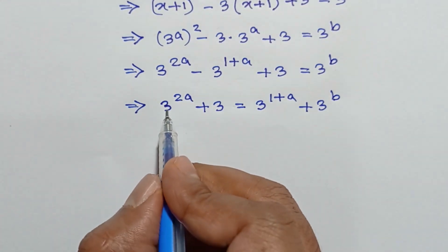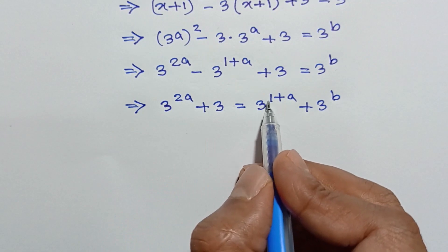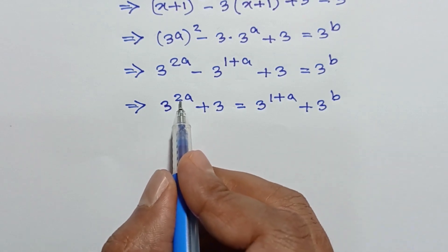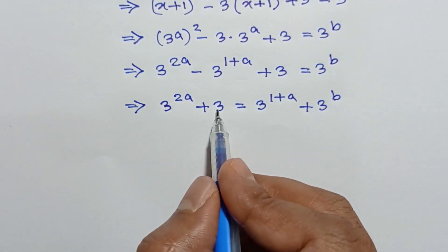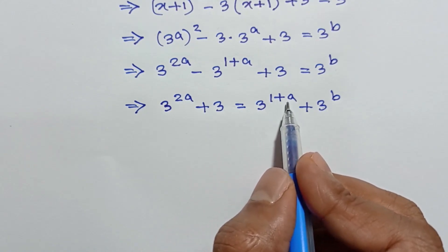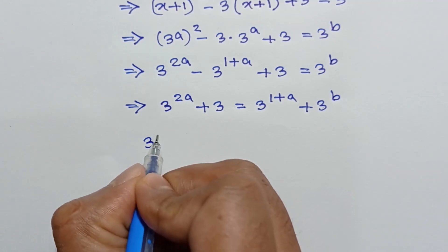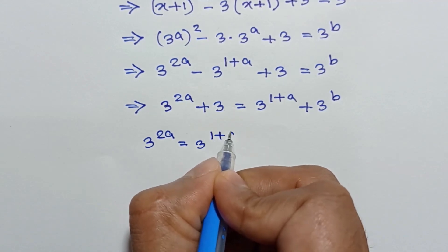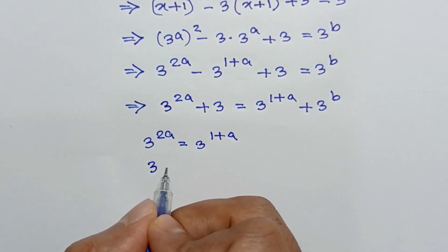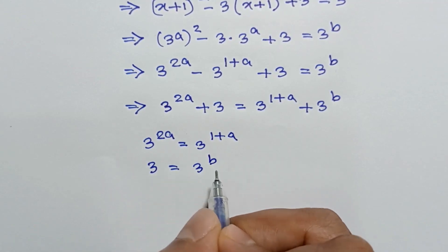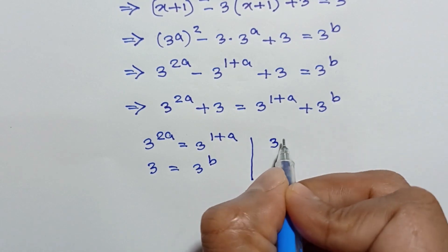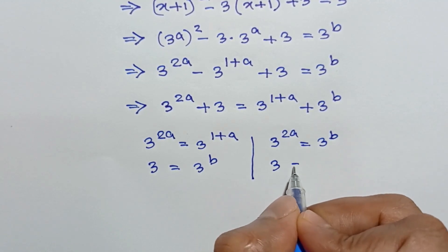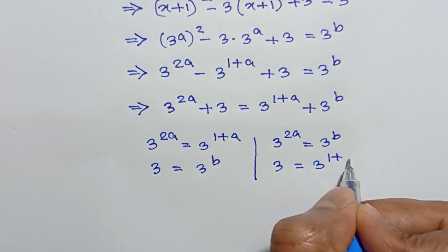For the integer solution, we consider two cases. In the first case, 3 to the power 2a is equal to 3 to the power b, and then 3 is equal to 3 to the power 1 plus a. In the second case, 3 to the power 2a is equal to 3 to the power 1 plus a, and then 3 is equal to 3 to the power b.